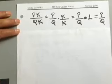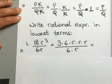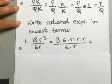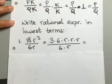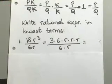So let's go ahead and take a look at some simple examples here. Let's say we have this expression, 18r to the third over 6r.